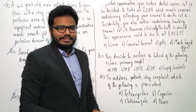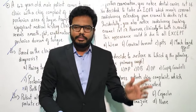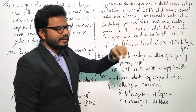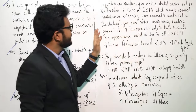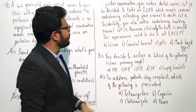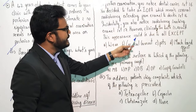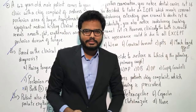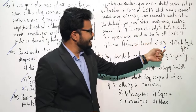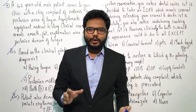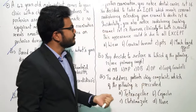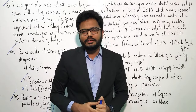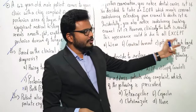On further examination, you noticed dental caries in relation to 1,6, and you decided to take an intraoral periapical radiograph — we discussed bitewing and periapical radiographs yesterday — which reveals carious radiolucency extending from enamel into dentin in relation to 1,6. Incidentally, you also notice radiolucency involving enamel in relation to 1,7; however, clinically the tooth is sound. This appearance could be due to all except — options include: wear, cervical burnout, pits, and mag band effect.